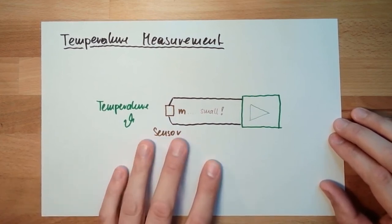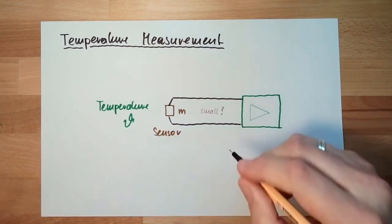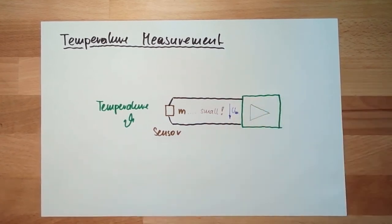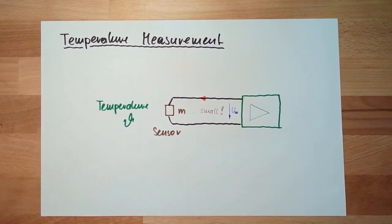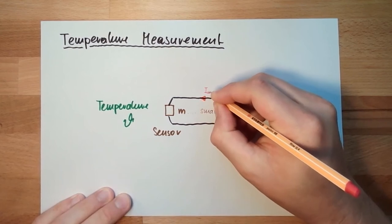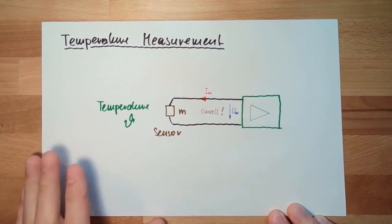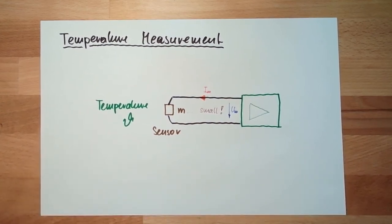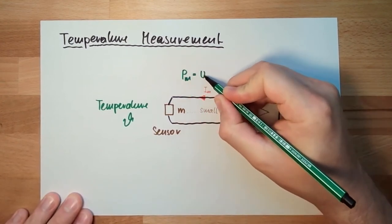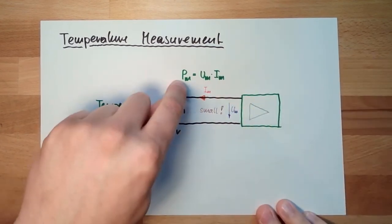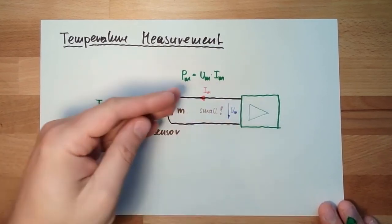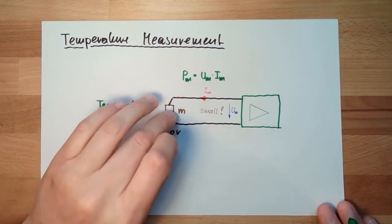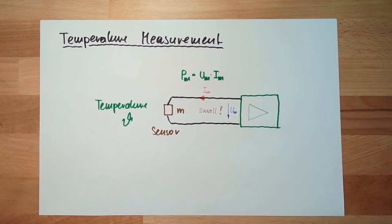That's one thing, the mass of the temperature. The other thing is, usually we do have here some voltage, measure voltage, and we do have here some current, measurement current. Whenever we have voltage and current somewhere, whenever we have this, we do have also power. So the power, the measurement power of the sensor is the voltage multiplied by the current. This power is brought into the system. There is some self-warming of the sensor, just because we connected it electrically. The sensor is getting warmer. Self-warming effect. Now it depends a little, how much does this influence my measurement?